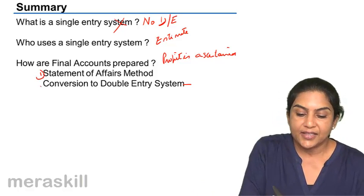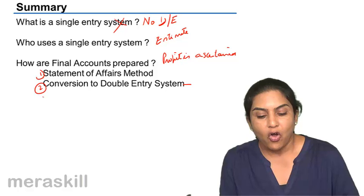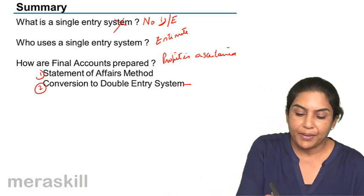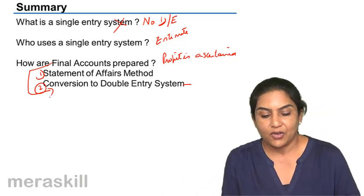What are the two methods? Either the statement of affairs method or by converting to double entry. If you convert to the double entry system, then we end up making final accounts.